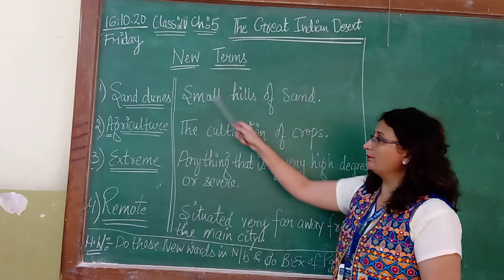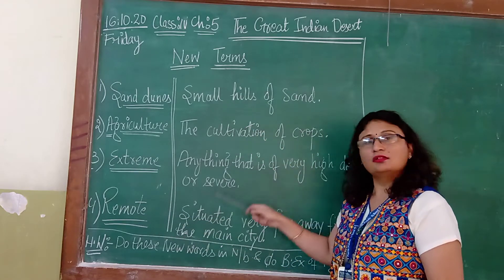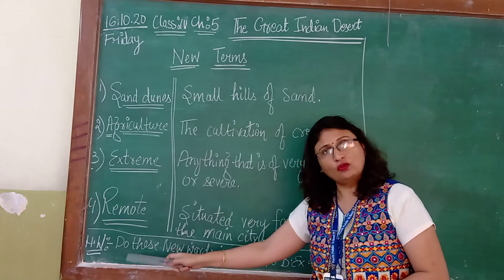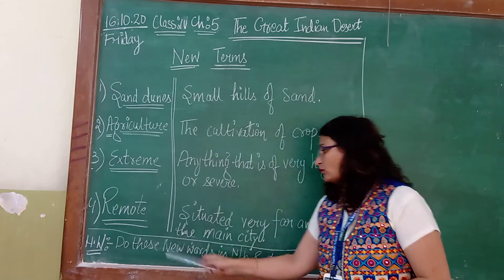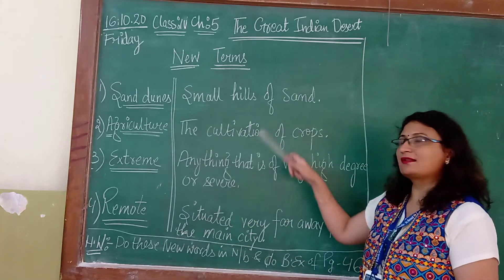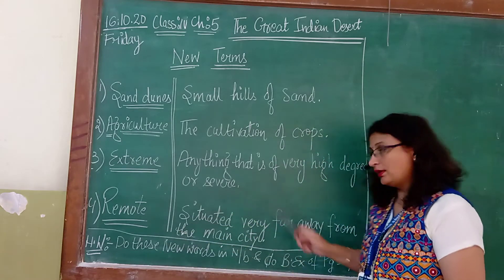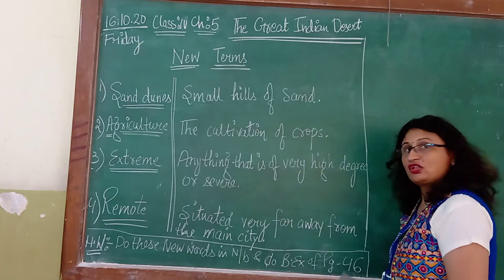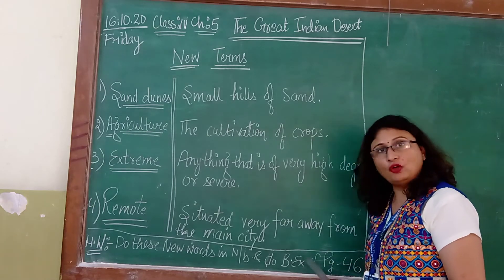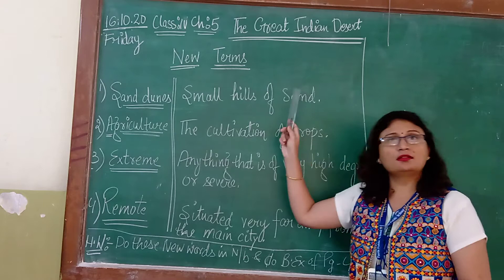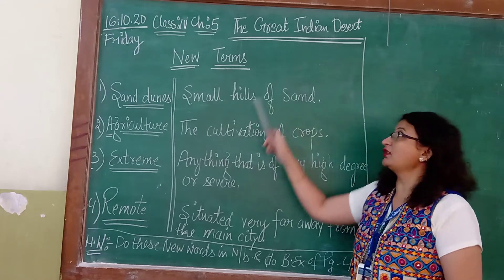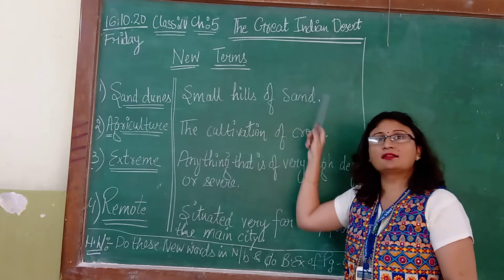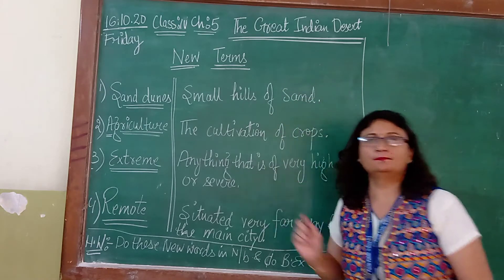So today we studied the four new terms of this chapter. As homework, you have to write these new words in your notebook and do the back exercise given on page number 46. With this, your chapter of Great Indian Desert is completed. Thank you.